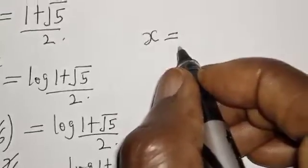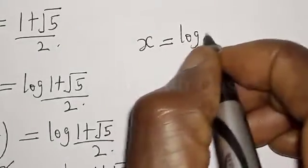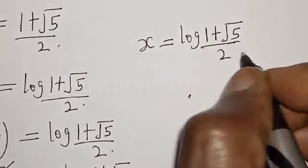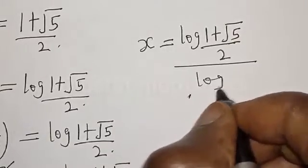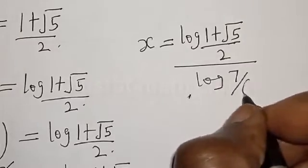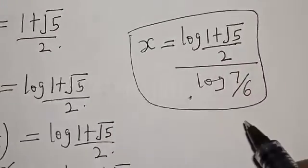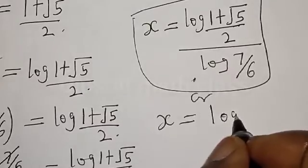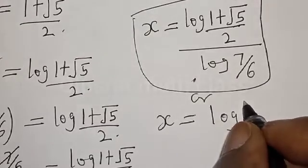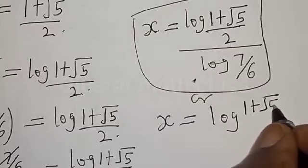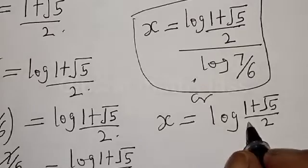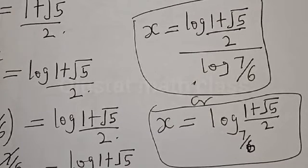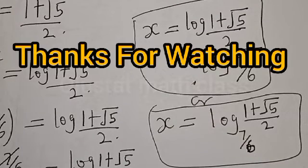Therefore s is equal to log of 1 plus square root of 5, divided by 2, divided by log of 7 divided by 6. That is the value of s. You may also write it in the form: s equals log base 7 divided by 6 of the golden ratio 1 plus square root of 5 divided by 2. If you have enjoyed the class, please don't forget to like, share, comment and subscribe. Thank you.